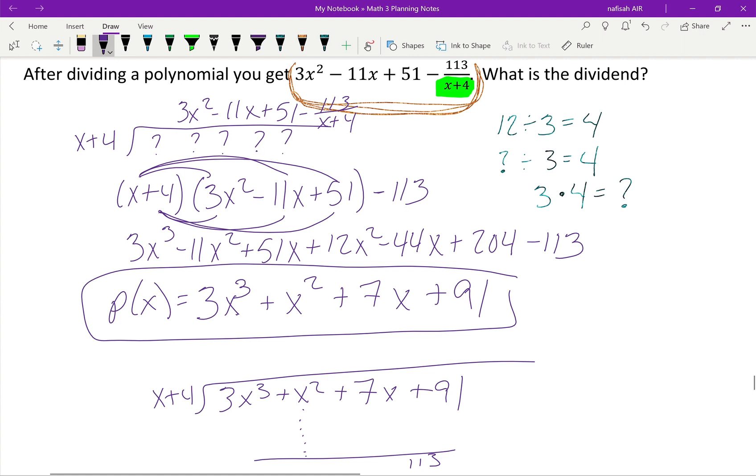My quotient would be 3x² - 11x + 51. Well actually, I get -113 as the remainder, and then I will have minus the 113/(x+4).